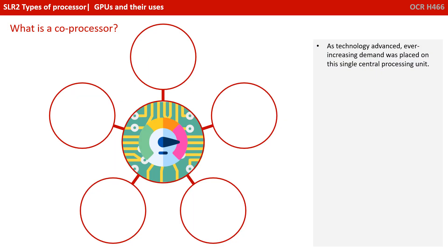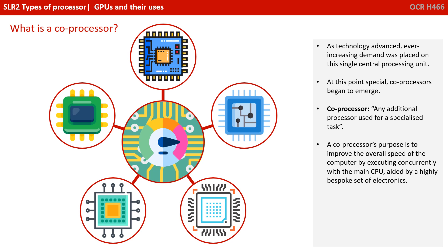As technology advanced, ever-increasing demand was placed on this single central processing unit. At this point, special coprocessors began to emerge. A coprocessor is effectively any additional processor used for a specialised task. Its purpose is to improve the overall speed of the computer by executing concurrently or alongside the main CPU, aided by a highly bespoke set of electronics.